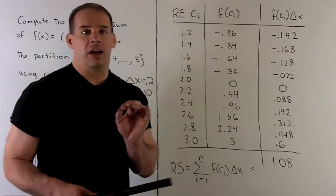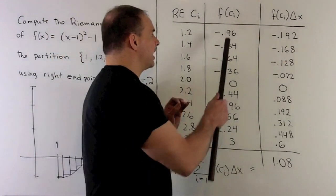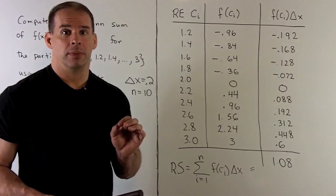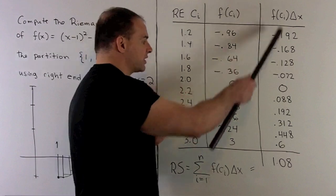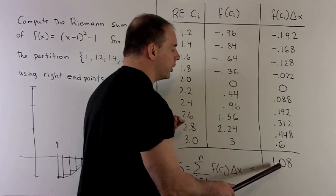Then to get the area of your rectangle, which may be signed area, we're just going to take these numbers, multiply by our delta x, which is a .2. Then, to get our Riemann sum, we're just going to sum this column. When I do that, what comes out is going to be a 1.08.